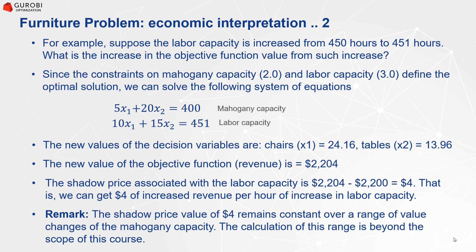The shadow price value of $4 remains constant over a range of values of the capacity. The calculation of this range is beyond the scope of this course, so we just note that this is valid over a certain range, not for any capacity value.